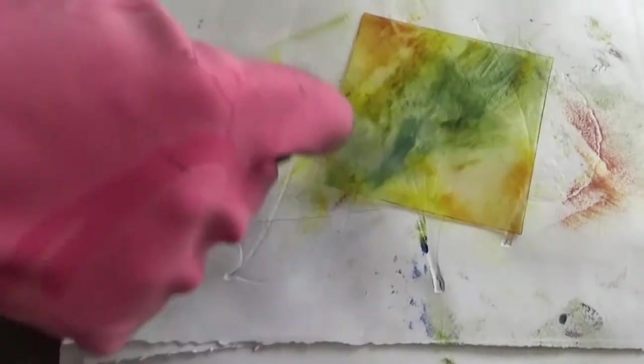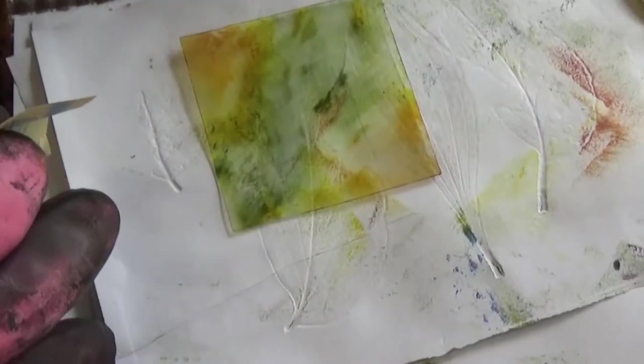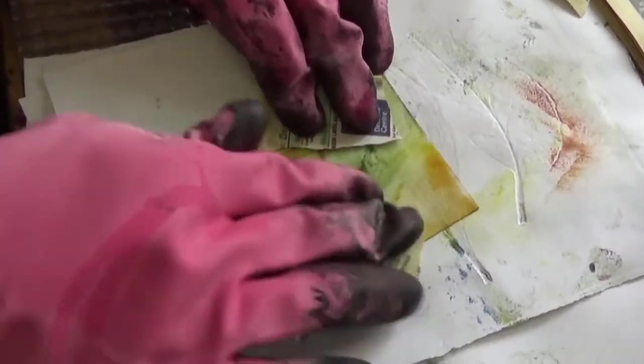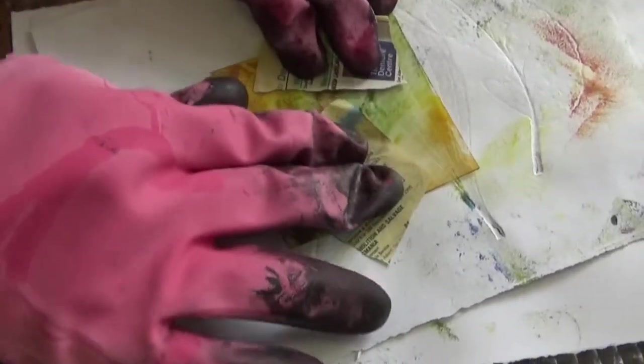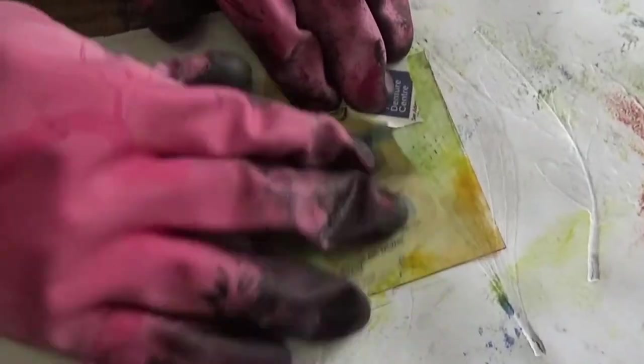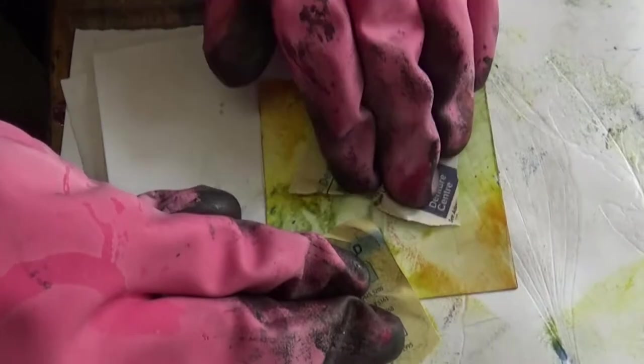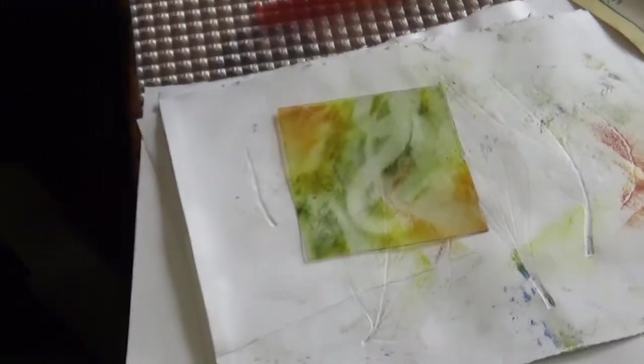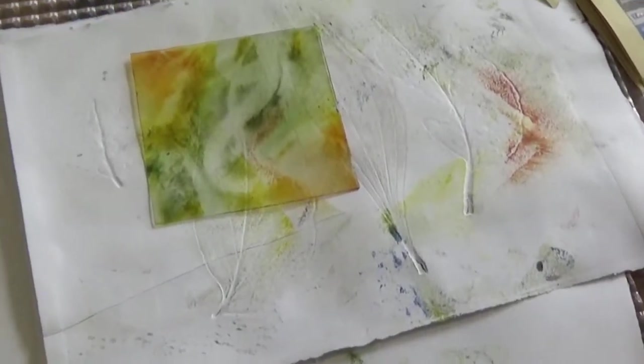I feel a bit inclined, so I'll leave some of the edges. I'm also working really small. The smaller you work, the harder the registration. If you're registering something really big and it's out a millimetre, it doesn't matter. If this is out a little bit, you probably noticed it. So I'm hoping that the colours are so subtle that it's not going to worry too much.